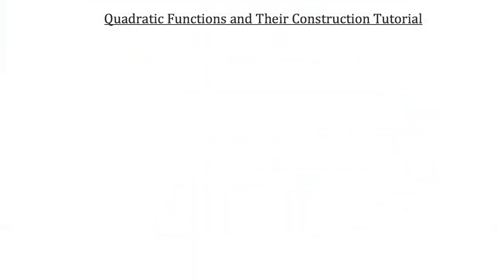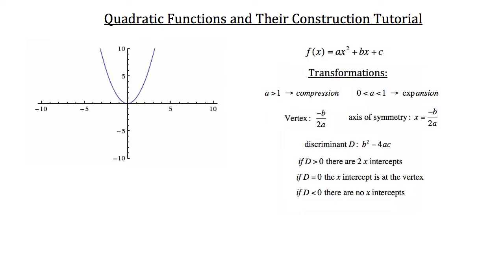This is the quadratic functions and their construction tutorial. Here's a little refresher: this is your typical quadratic function graphed here. It makes a parabola, a u-shaped curve. The generic function for quadratic functions is f(x) = ax² + bx + c. Remember that when a is positive, your graph is going to open upward like our graph does here; when a is negative, your graph would open downward.